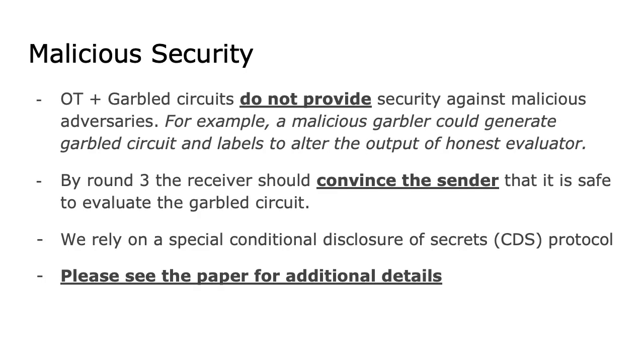That's all I could say about the explainable secure protocol today. The next step is the maliciously secure protocol. Note that oblivious transfer and garbled circuits alone do not provide security against malicious adversaries. For example, a malicious garbler could generate a garbled circuit and labels to alter the output of an honest evaluator. Therefore, by round 3, the receiver should convince the sender that it is safe to evaluate the garbled circuit. For this purpose, we rely on a special conditional disclosure of secrets protocol, the details of which are in the paper.